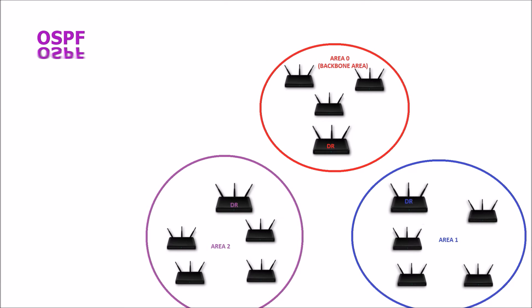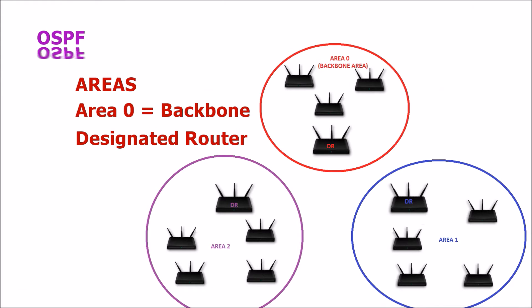OSPF also divides a network into areas, with area 0 being referred to as the backbone area. There is also a designated router assigned to each area, responsible for relaying changes within its area to the rest of the network.